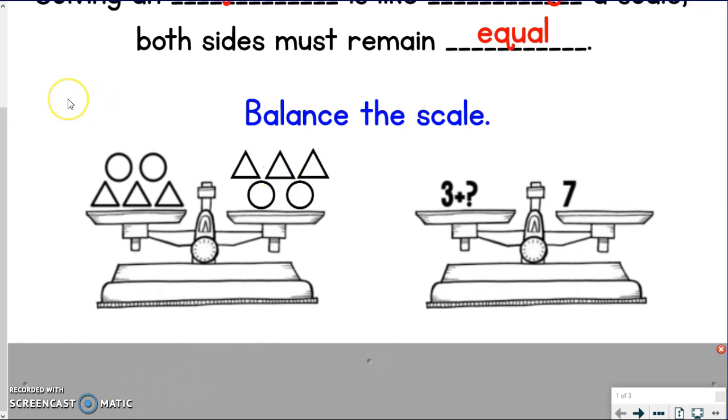Go ahead and draw that in. Notice how I flip-flopped where they were, but it still keeps it equal because they have the same thing happening. If I took one circle away from this side, I would need to take one circle away from this side. Or if I added a square to this side, I would need to add that square to this side. It has to stay balanced. Whatever you do to one side, you have to do to the other.